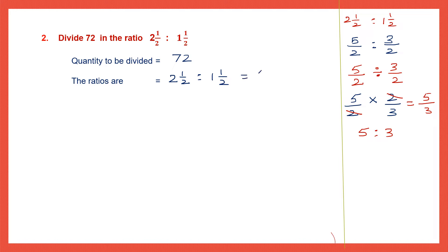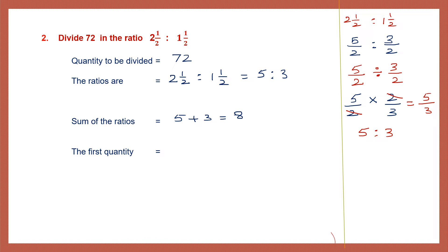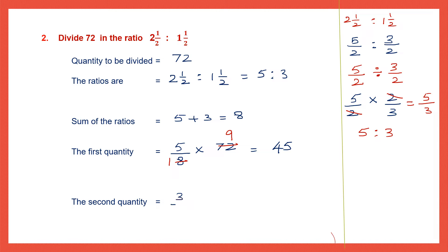Now the ratios have become 5 is to 3. Find the sum of the ratios: 5 plus 3 is equal to 8. To find the first quantity, take the first term 5, divided by 8, and multiply by 72. Cancel: 8 nines are 72, so 5 nines are 45. The first quantity is 45. For the second quantity, take the second term 3, divided by 8, multiplied by 72. Cancel: 8 nines are 72, and 9 threes are 27. The second quantity is 27.